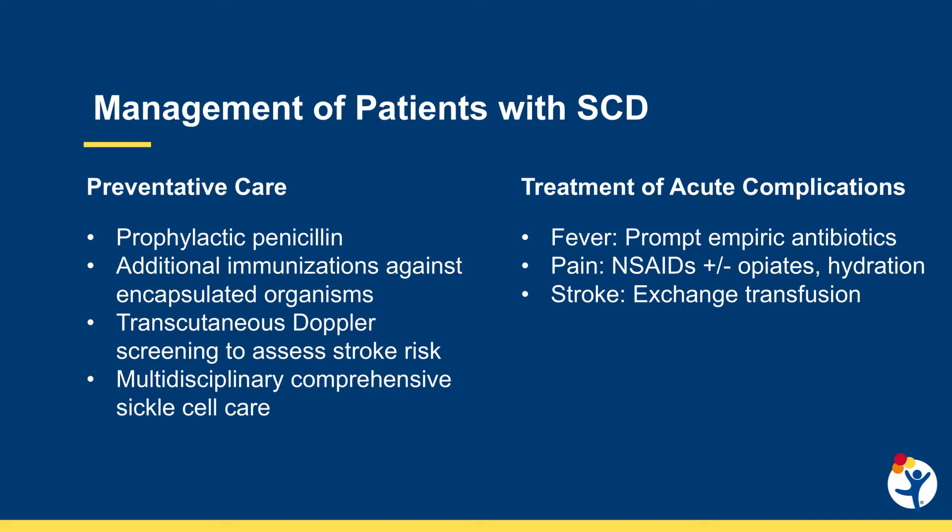Painful vaso-occlusive crises are usually managed with NSAIDs, opiates, and hydration but may require inpatient hospitalization for parenteral analgesia if adequate control cannot be obtained with oral medications at home. Transcutaneous doppler screenings are performed to evaluate stroke risk in patients with hemoglobin SS disease or sickle beta 0 thalassemia between 2 and 16 years of age. Patients with abnormal cerebral blood flow velocities should start chronic transfusion therapy as primary prophylaxis, which reduces the risk of stroke by over 90 percent.